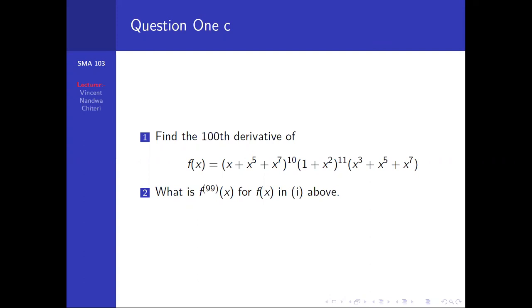The question asks us to find the 100th derivative of f(x) given by (x + x⁵ + x⁷)¹⁰ multiplied by (1 + x²)¹¹ multiplied by (x³ + x⁵ + x⁷), and then to find the 99th derivative of the same function f(x).